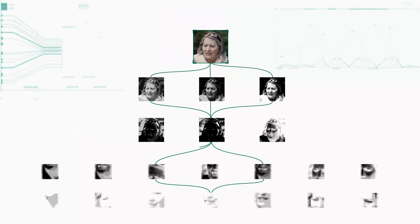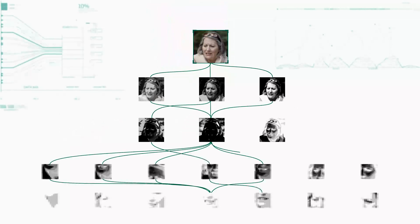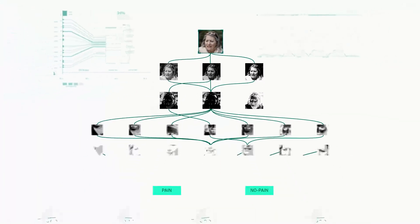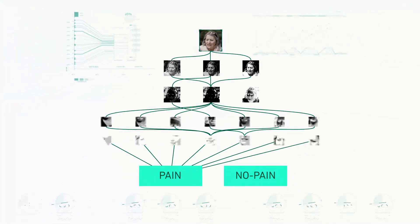The networks are trained through a mathematical process of machine learning. This automatically tunes the PainCheck algorithm parameters to recognize target data in the most accurate way.